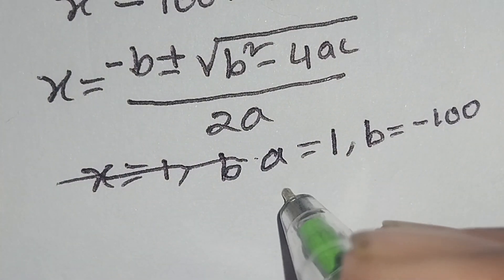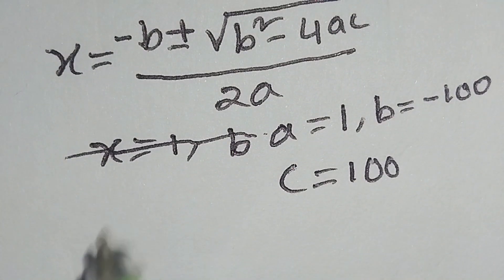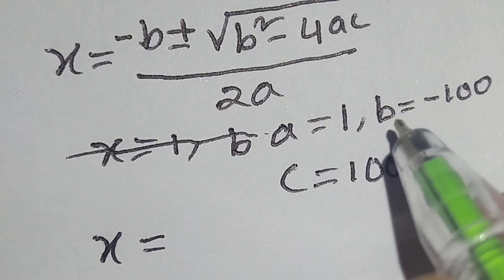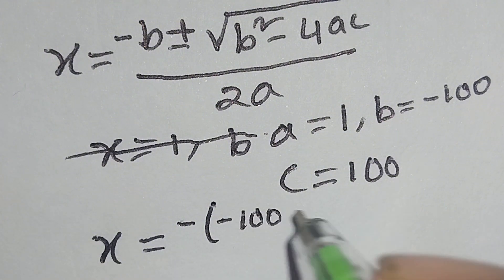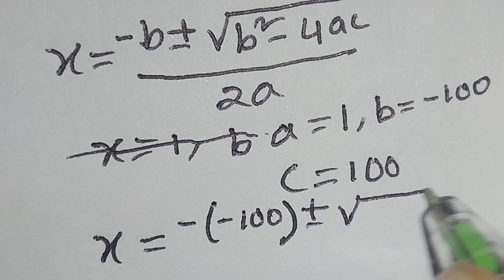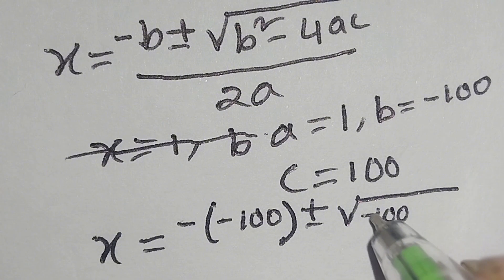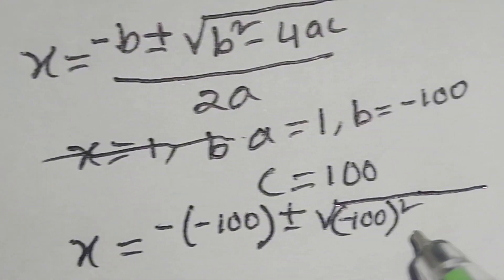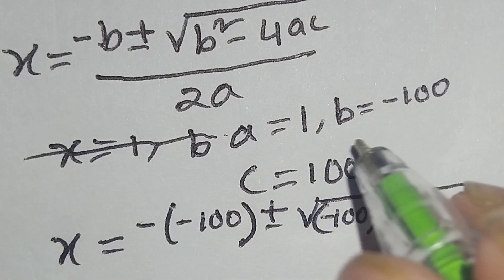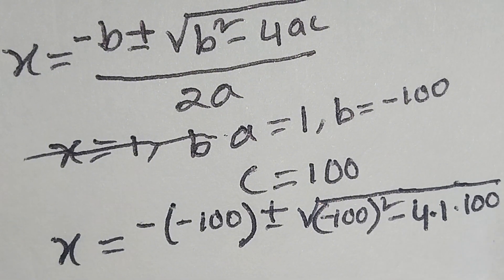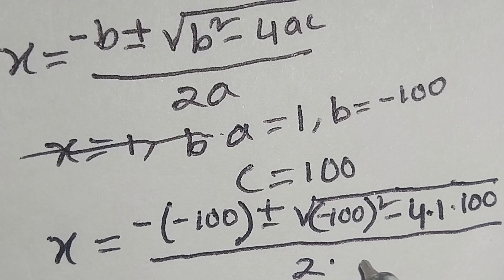And c is equal to 100. So we will get x is equal to minus b — since b equals minus 100, minus b is plus 100 — plus or minus square root of b squared minus 4ac, over 2a. Here a equals 1, b equals minus 100, c equals 100, and 2 times a equals 2.